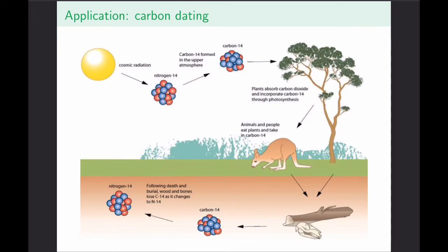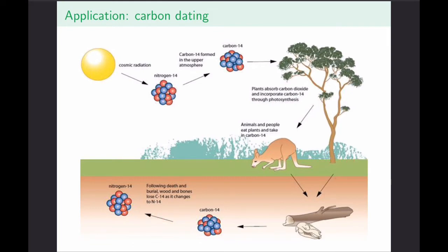For the next application, let's consider how carbon passes through the atmosphere as well as living and dead things. Carbon gets formed in the cosmos and passes down to Earth as nitrogen-14, which is then formed in the upper atmosphere and passes through all living things including plants and animals. Once that living thing dies, carbon-14 changes back to nitrogen-14. We can use the amount of carbon-14 in a fossil to figure out when carbon stopped being produced. Carbon-14 is fairly easy to detect and measure.